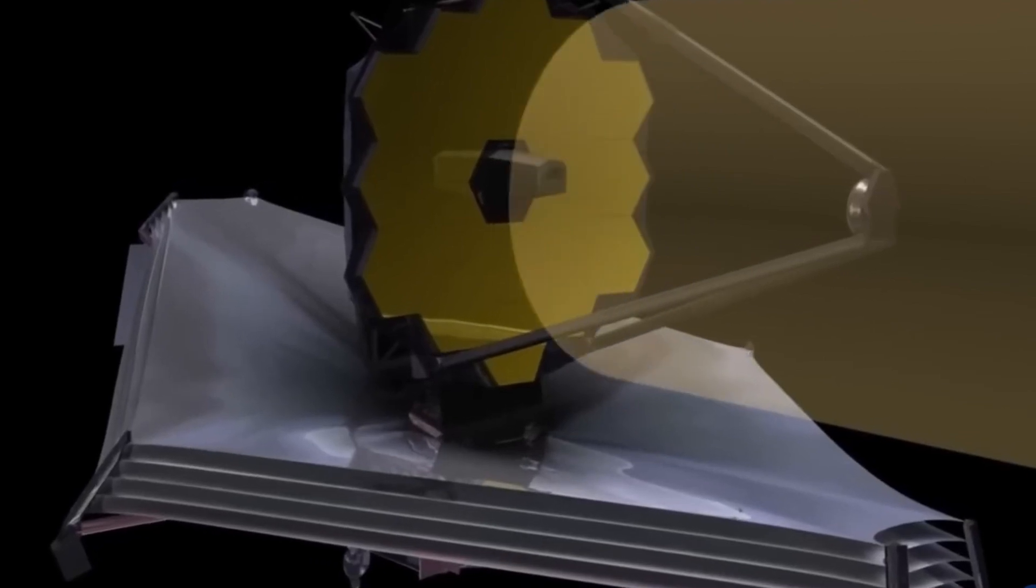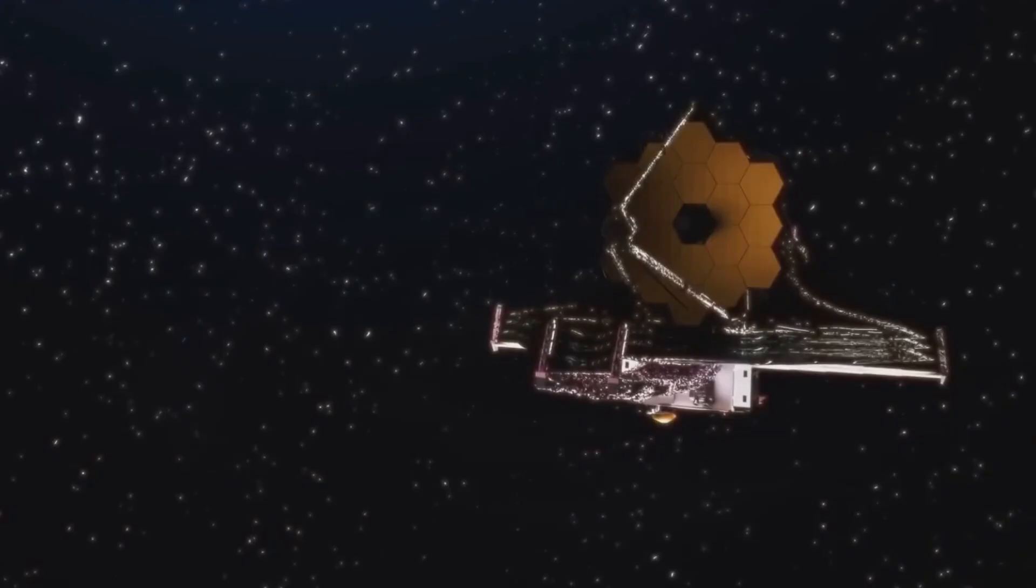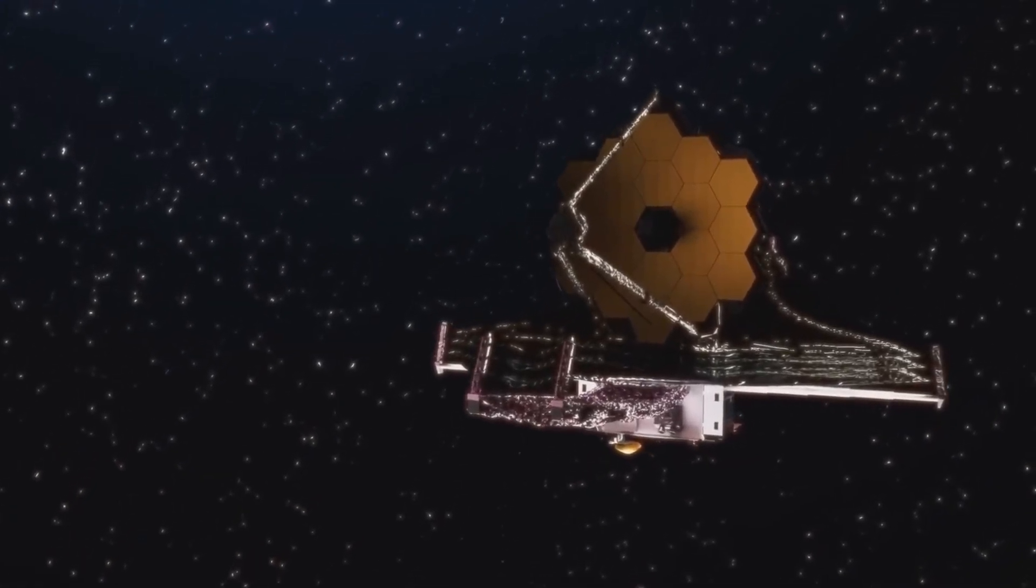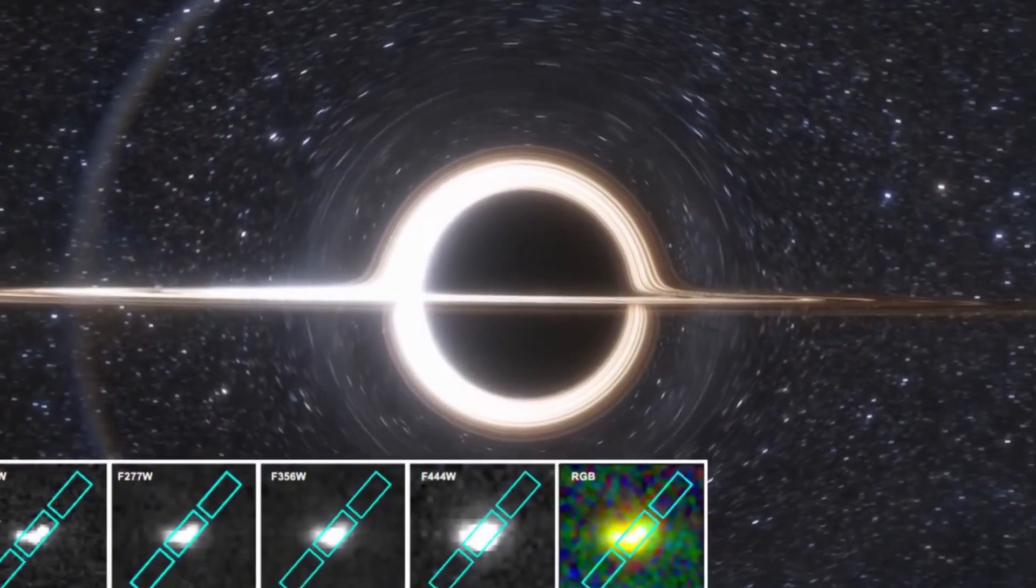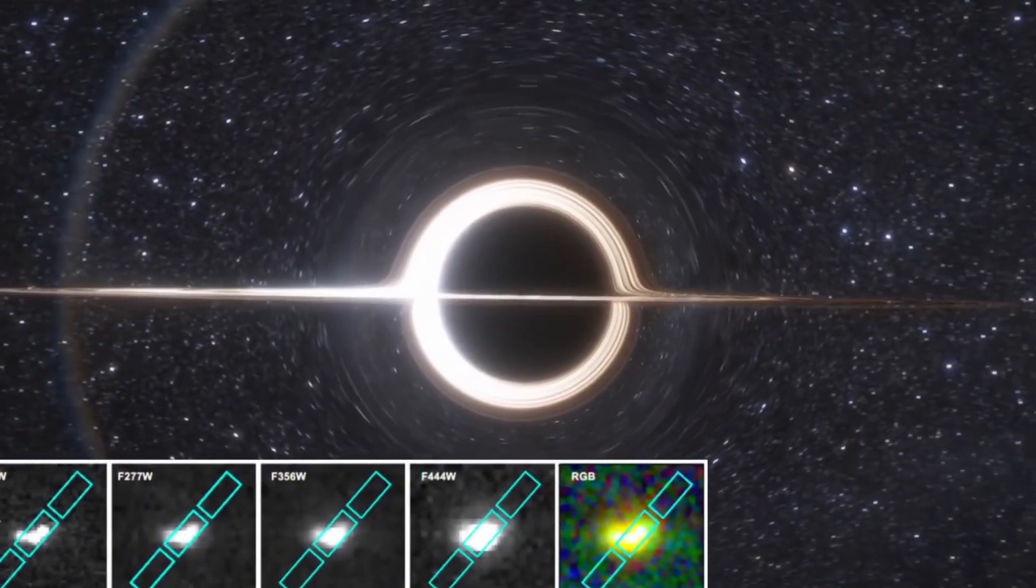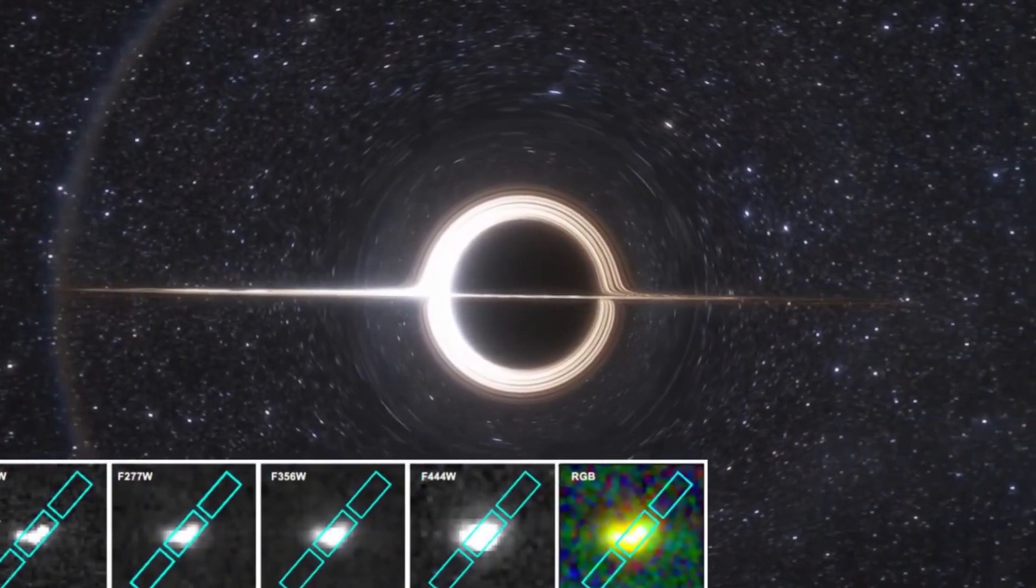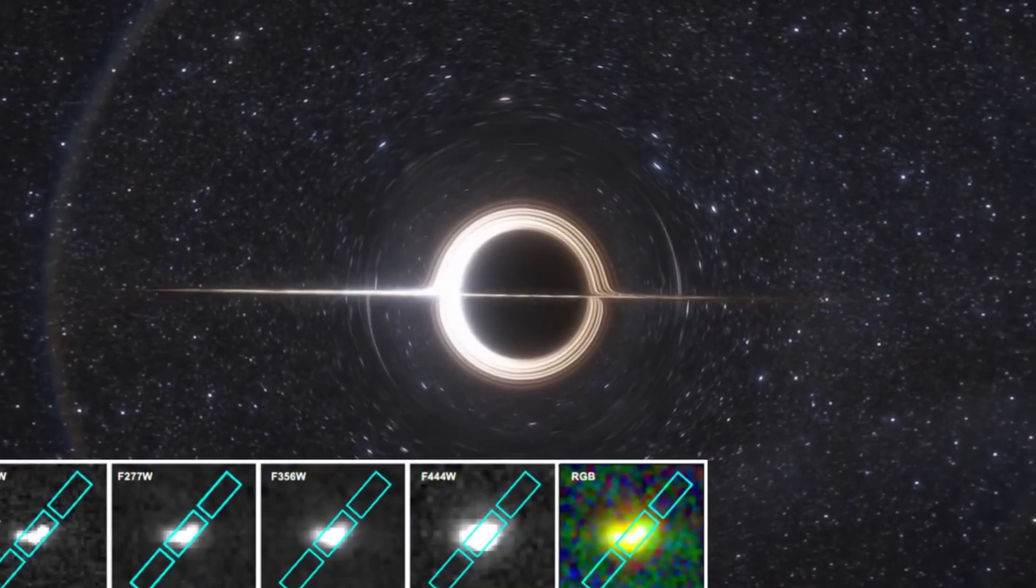Designed specifically to observe the universe in infrared light, Webb can see through these dense clouds and reveal details that other telescopes might miss. One of the early targets for it was the galaxy ESO 428 G14, which lies about 70 million light-years away. This galaxy, known as a Seyfert galaxy due to its bright core, has been studied extensively by telescopes like ALMA and Hubble.